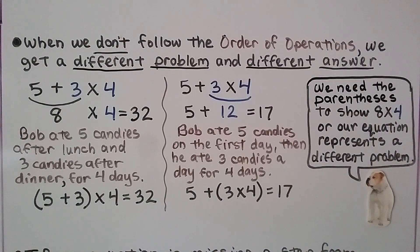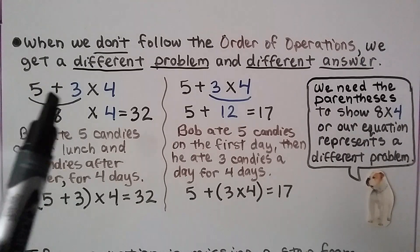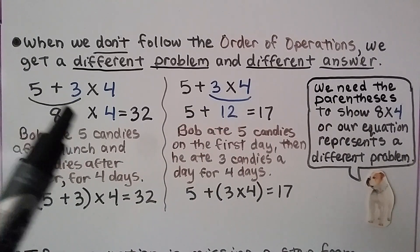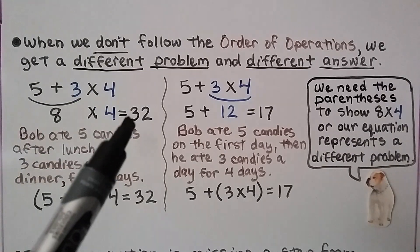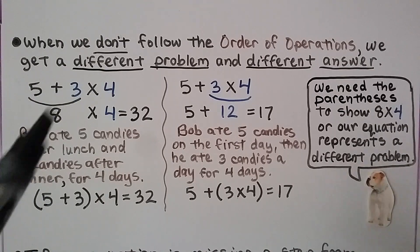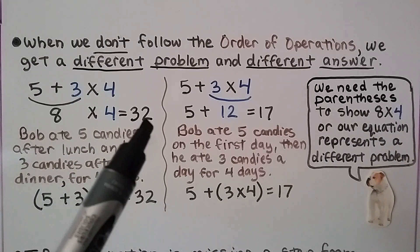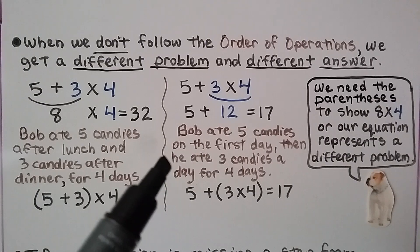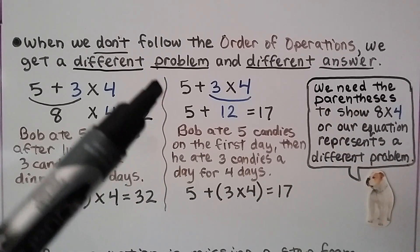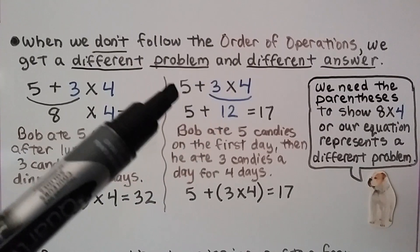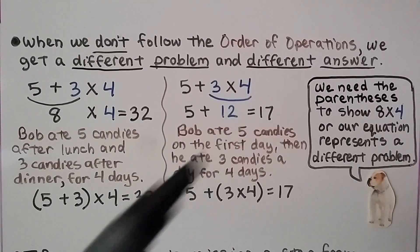When we don't follow the order of operations, we get a different problem and answer. For 5 plus 3 times 4: if we add 5 plus 3 first, we get 8 times 4, which equals 32. This represents: Bob ate 5 candies after lunch and 3 candies after dinner for 4 days — 32 total. If we do multiplication first per order of operations, it's 5 plus 12 equals 17 — Bob ate 5 candies on day one, then 3 a day for 4 more days.